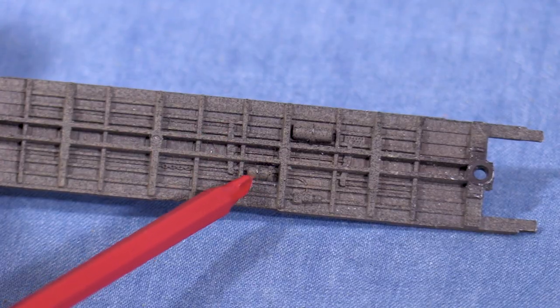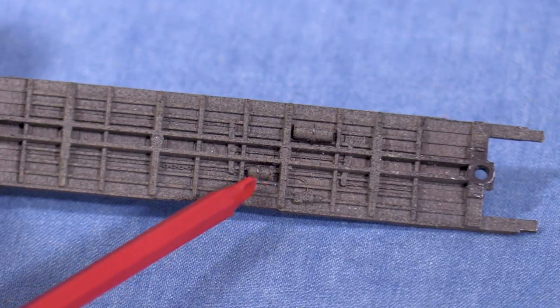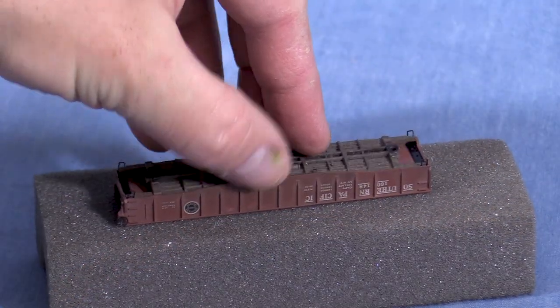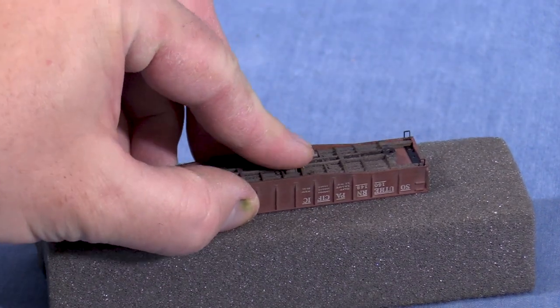If you look at the details under the frame, you'll see that the brake cylinder has one pointy end. That end should point toward the brake wheel. The frame should just press fit into the car body. It'll hold the steps in place.